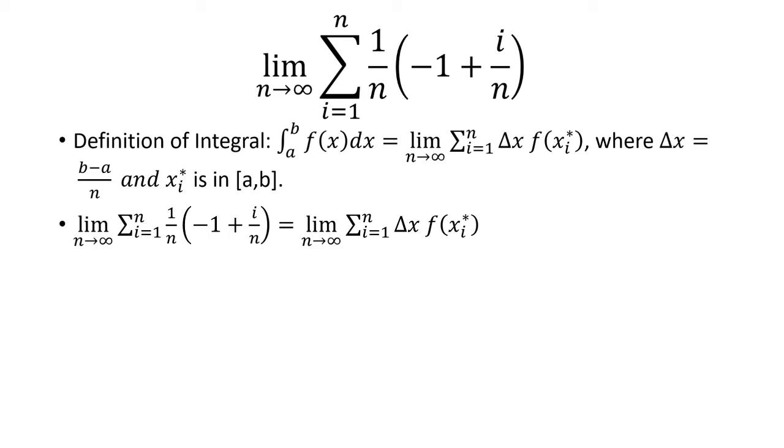In our case we just want to match up what Δx is and what f(xi*) is. So Δx here is going to be (b - a)/n. Now in our case Δx is 1/n, so we know that b - a has to be 1, which b - a represents the length of the interval.